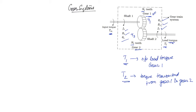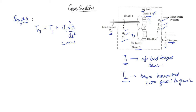Now we can write the mathematical equation. For shaft 1, the input torque Tm is equal to the output torque of gear 1, which is T1, plus the inertia element J1 times d²θ1/dt², plus the friction element B1 times dθ1/dt. This is the first equation.